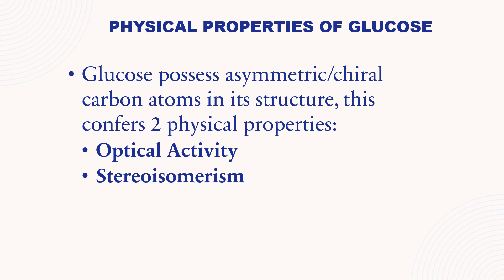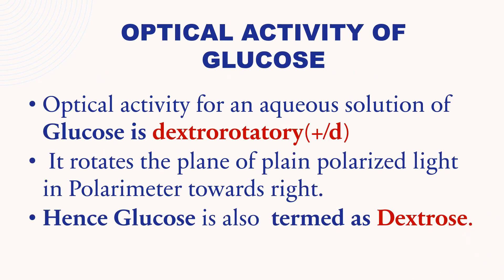Physical properties of glucose. Glucose possesses asymmetric chiral carbon atoms in its structure. This confers two physical properties: optical activity and stereoisomerism. Regarding optical activity, an aqueous solution of glucose is dextrorotatory, denoted by (+)D. It rotates the plane of plane-polarized light in a polarimeter towards the right. Hence, glucose is also termed dextrose.